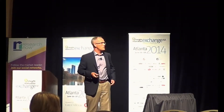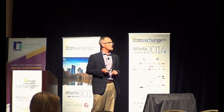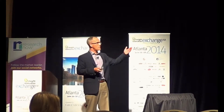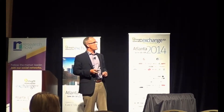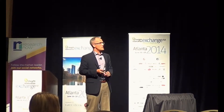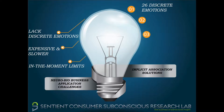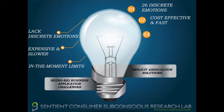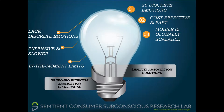Implicit association solutions offer the opposite of these. We can measure, in our case, up to 26 discrete emotions — we're going to show you how to do that today. They're cost-effective, they're fast, they're mobile, they're globally scalable, and you have representative samples. You can integrate them with all of your other great conscious measures.